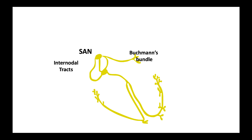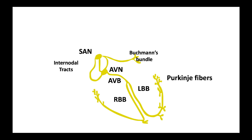First, we have the sinoatrial node, or SA node, in the right atrium, from which generated impulses are conducted downwards through the atrial muscles towards the AV node using internodal tracts, and to the left atrium through the Bachmann bundle. Electrical impulses then reach the AV node and travel downwards through the His bundle, which divides into the left and right bundles. The left bundle further divides into the anterior and posterior hemifascicles to supply the left ventricle, while the right bundle supplies the right ventricle. Both bundles then feed Purkinje fibers to both ventricles.